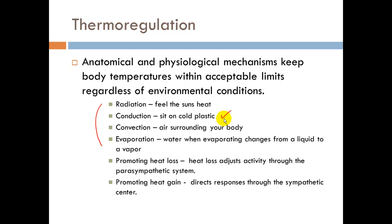Promoting heat loss is adjusted through the parasympathetic nervous system — please make note of that. So how we lose heat is done through the parasympathetic nervous system. Promoting heat gain responds through the sympathetic centers. If we're trying to warm up, it's sympathetic; if we're trying to cool off, it's parasympathetic.